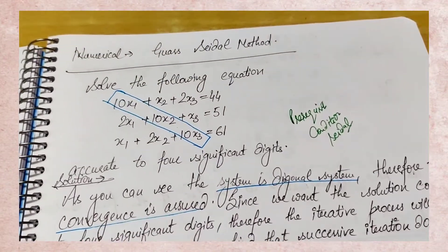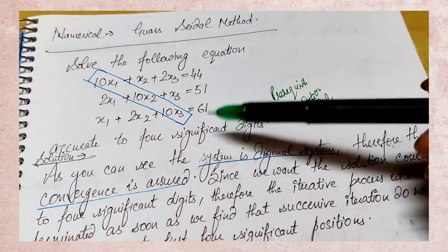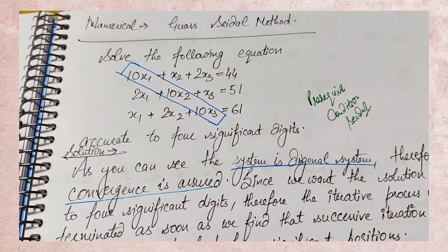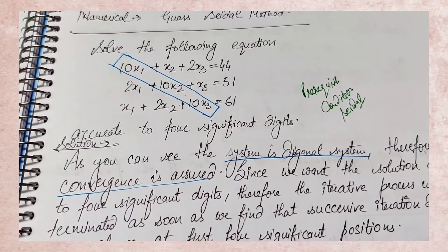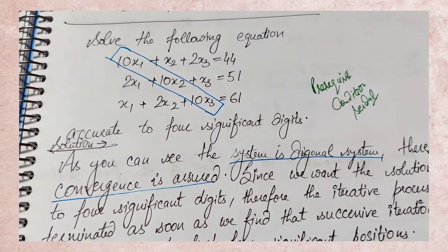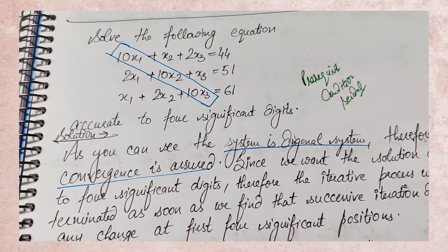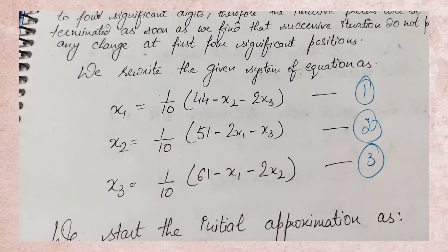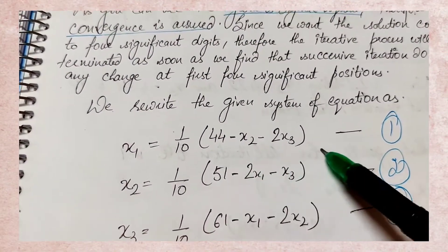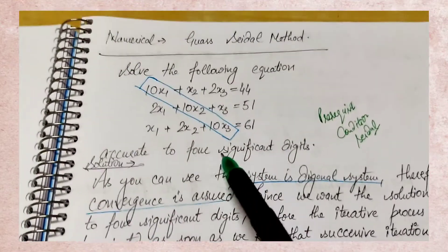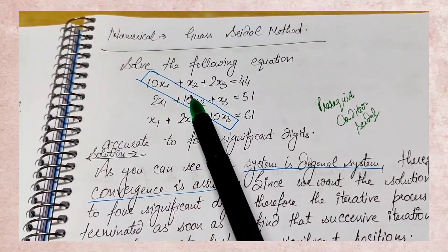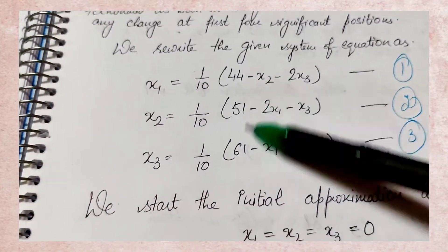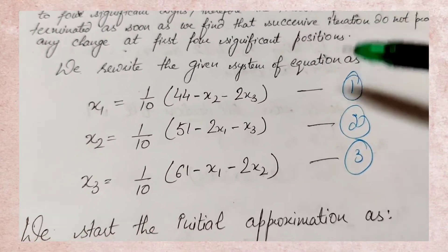After that, you rewrite the particular equations using the rearrangement method. Here, 10x1 means we rearrange to express x1, x2, and x3 separately. The rule was to proceed with initial values, so 1/10 comes out from each — one equation for x1, one for x2, one for x3. That is just the way of writing it. For example: x1 = (1/10)(44 − x2 − 2x3), and similarly for x2 and x3.